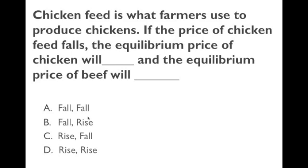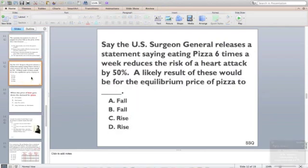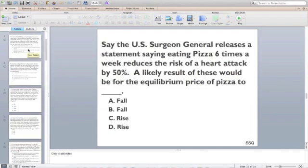Finally, an easy question: if the price of chicken feed falls, and chicken and beef are substitutes, decreasing the price of a key input for chicken will reduce the price of chicken. If the price of chicken goes down, people will buy more chicken and less beef, so the demand for beef goes down and the price of beef goes down. The answer is A. I hope this is useful — there are more problems on Aplia, so there should be no surprises on the exam. Good luck.